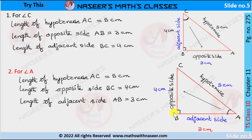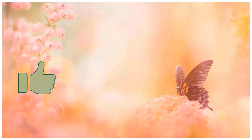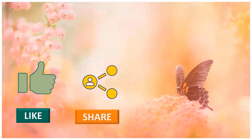With respect to angle A, BC is the opposite side, AB is the adjacent side, and AC is the hypotenuse. The length of hypotenuse AC is equal to 5 centimeters, the length of the opposite side BC is equal to 4 centimeters, and the length of the adjacent side AB is equal to 3 centimeters.